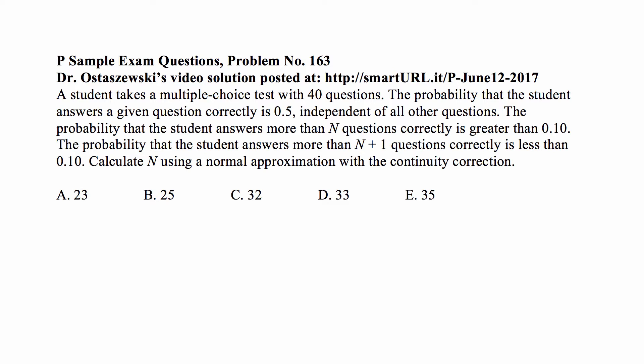A student takes a multiple choice test with 40 questions. The probability that the student answers a given question correctly is 0.5, independent of all other questions. The probability that the student answers more than n questions correctly is greater than 0.10, and the probability that the student answers more than n plus 1 questions correctly is less than 0.10. Calculate n using a normal approximation with the continuity correction.